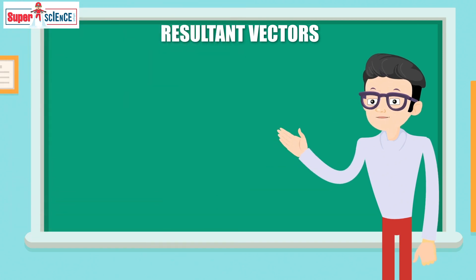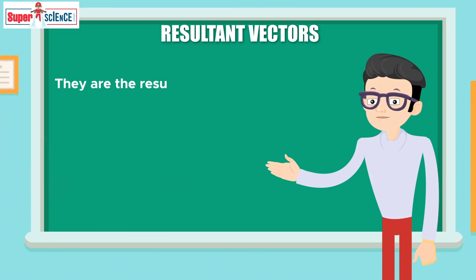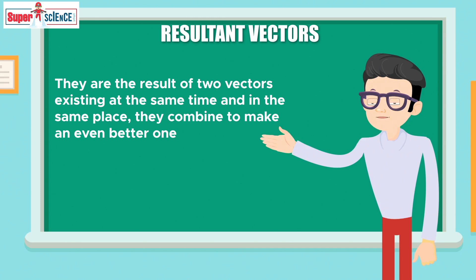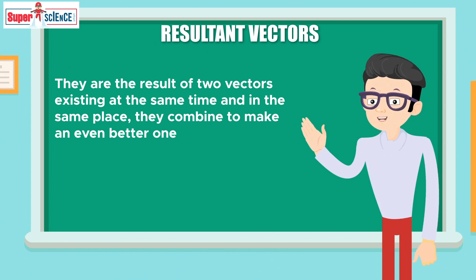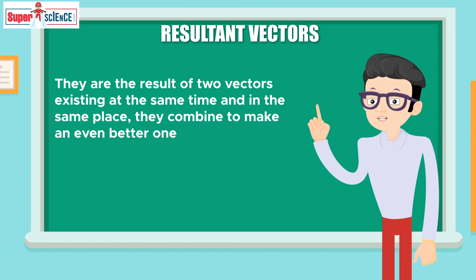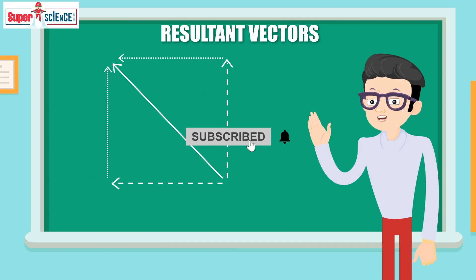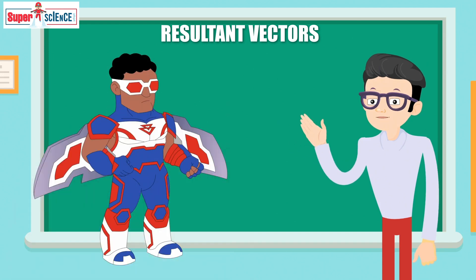Sam needs to understand the elusive resultant vectors. Resultant vectors are more or less what they sound like — they are the result of two vectors existing at the same time and in the same place, combining to make an even better one. The vectors act in different directions, but by acting together their work combines to act in an entirely new direction. One really easy way to figure out the direction is called the parallelogram law. You form a parallelogram by duplicating both vectors, and the diagonal of that parallelogram is the resultant vector.